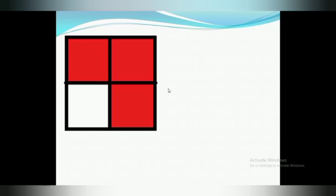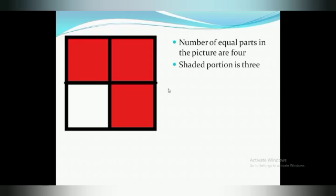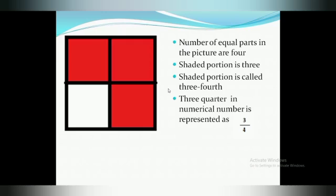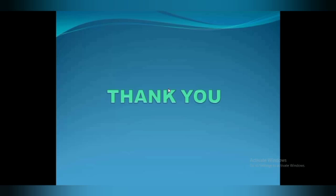Here the window has four parts and three parts are shaded out of four. That is called three-fourths, or three quarters. Three quarters in numerical form is represented as three upon four. Thank you.